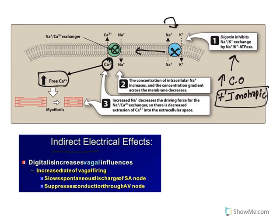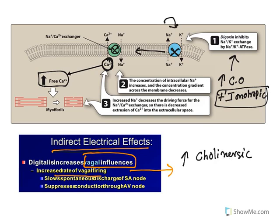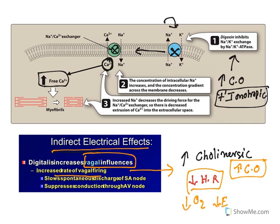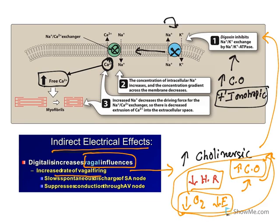There is also an indirect effect of digitalis glycoside: it has vagal influences. It increases vagal firing, which activates the cholinergic system. The cholinergic system's action on the heart is to reduce heart rate. So on one side digitalis is increasing cardiac output, and on the other side it is reducing heart rate. When heart rate is reduced, oxygen demand and energy demand are reduced, but cardiac output is maintained because of the direct action. So with less available energy, more blood is pumped out of the heart — this is the advantageous feature of cardiac glycosides.